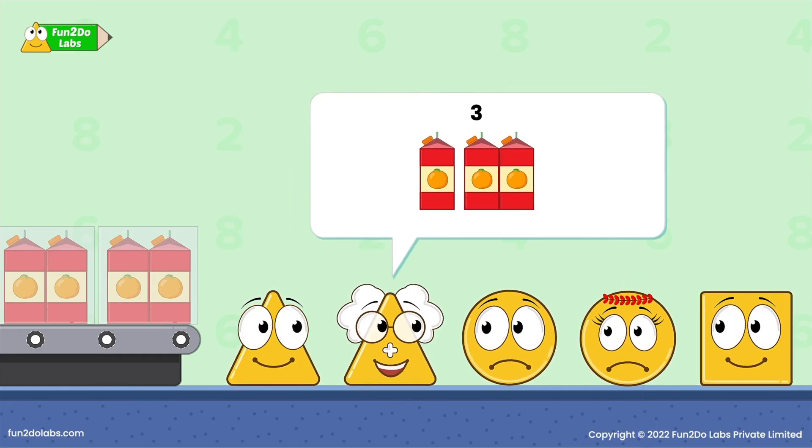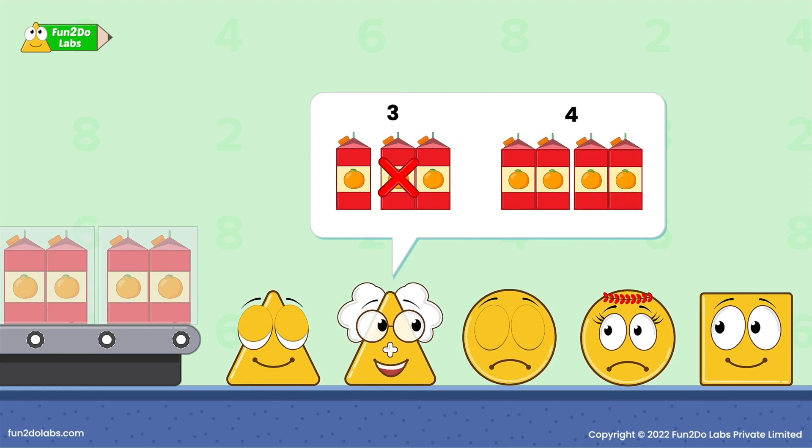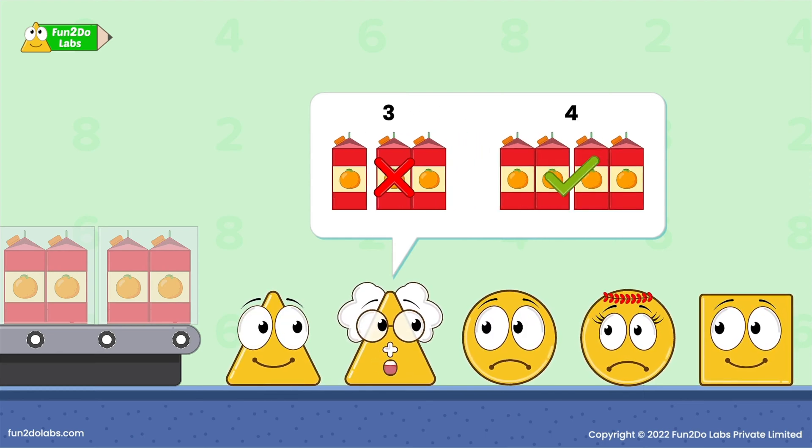Similarly, when you put three packets, two of your packets could form a pair. But still, one would be left. And finally, when Trejo added four, the packets formed two pairs and came out packed.